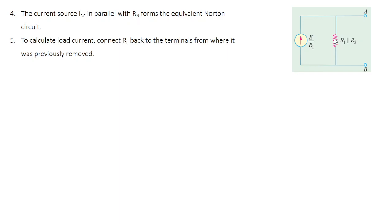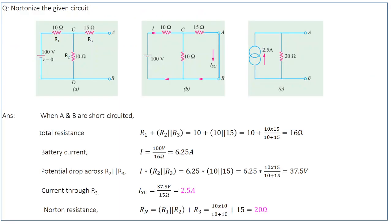If a load resistance RL is present, the load current is found by inserting RL back to its original position. Let's do a couple of problems to get more familiar with Norton's theorem. In the first problem, you have a DC power supply of 100 V with zero internal resistance, and three external resistances: R1 = 10 Ω, R2 = 10 Ω, R3 = 15 Ω. There is no load resistance between the output terminals.